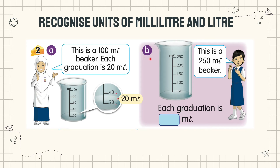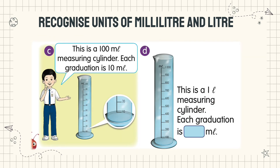B. The girl says: this is a 250 ml beaker. Soalan minta kita cari sengatan untuk bikar ini. Jadi, each graduation is 50 ml.